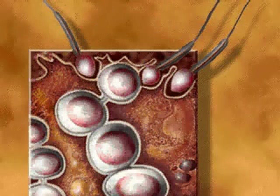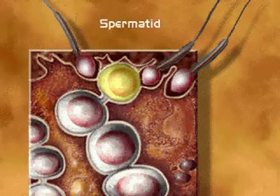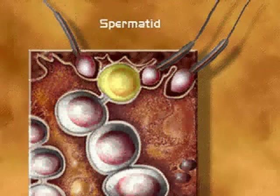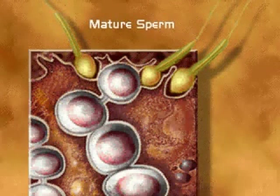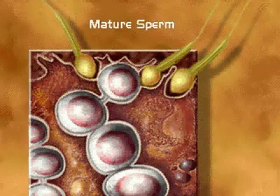The secondary spermatocytes complete meiosis, giving rise to haploid spermatids. Each spermatid contains 23 chromosomes. The spermatids then develop into mature sperm.